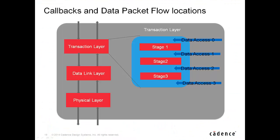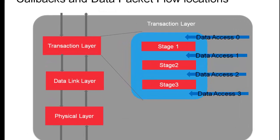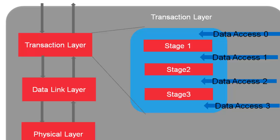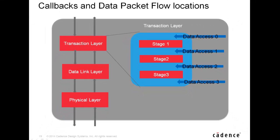Now we look into what information and when it will be sent from the monitor to the scoreboard. PCI Express VIP is instrumented with callbacks to provide important information to the verification engineer at different stages of execution, for different layers to be viewed, debugged, compared, and even manipulated — via a powerful callback mechanism. In this slide, I only show symbolic stages where callbacks allow the user to get access to the packets. Accurate information is provided in the user guide.